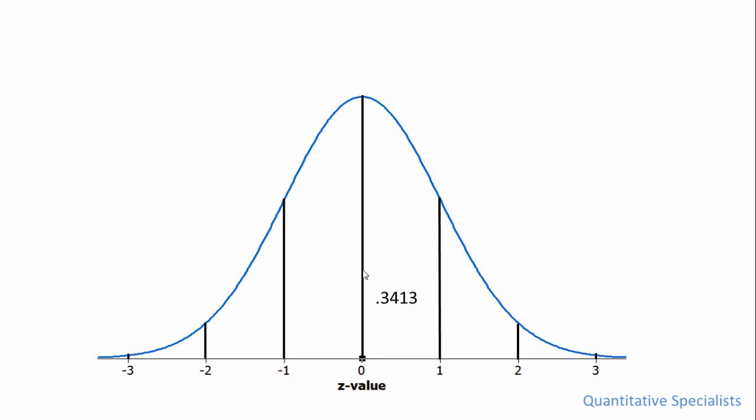So if from zero to one our proportion is 0.3413, then it should make sense that from zero to negative one the proportion is also 0.3413. And that's always the case because the distribution is symmetrical.